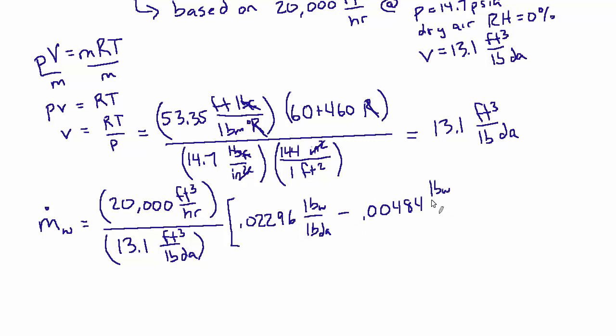And that works out to a mass flow rate of water of 27.66 pounds of water per hour, because the cubic feet cancel and the pounds of dry air cancel. So it ends up being pounds of water per hour, which is exactly what we want. And again, that is water that's been removed.